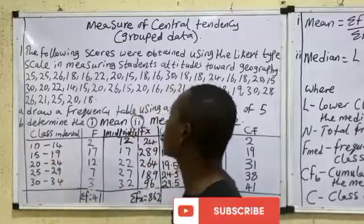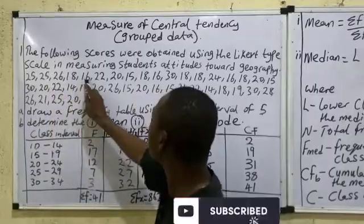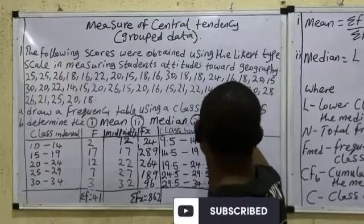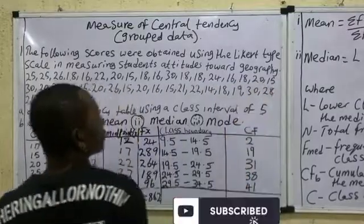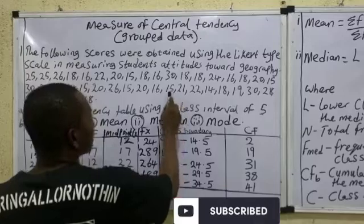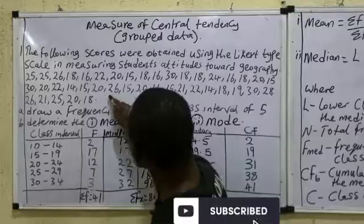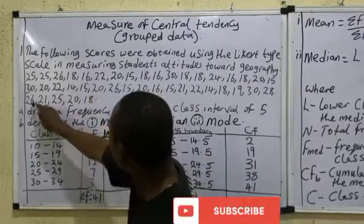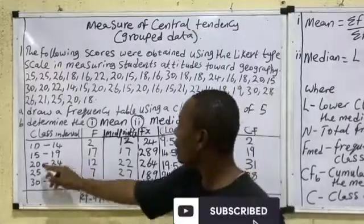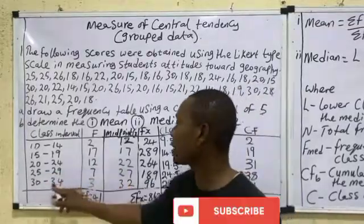For 15 to 19, count the values: 1, 2, 3, 4, 5, 6, 7, 8, 9, 10, 11, 12, 13, 14, 15, 16, 17. That gives us a frequency of 17. For 20–24 the frequency is 12, for 25–29 it is 7, and for 30–34 it is 3.